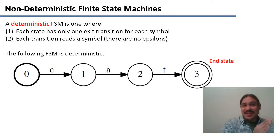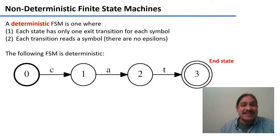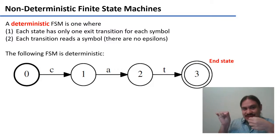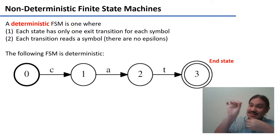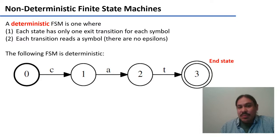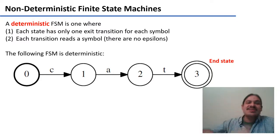Those were non-deterministic behaviors. A deterministic finite state machine is one that doesn't have these characteristics. When you are on a state and you get an input, there's only one transition that can use that input. In the finite state machine here, if you're on state zero and you get a C, there's only one path out — from zero to one. Also, each transition reads a symbol — C, A, and T for cat — and there's no transition that reads epsilons.